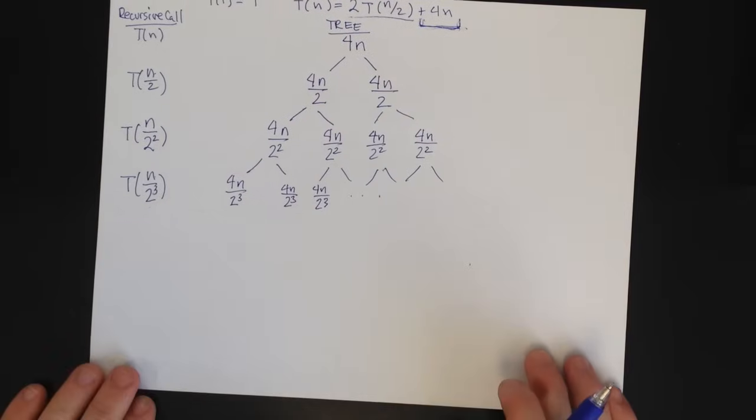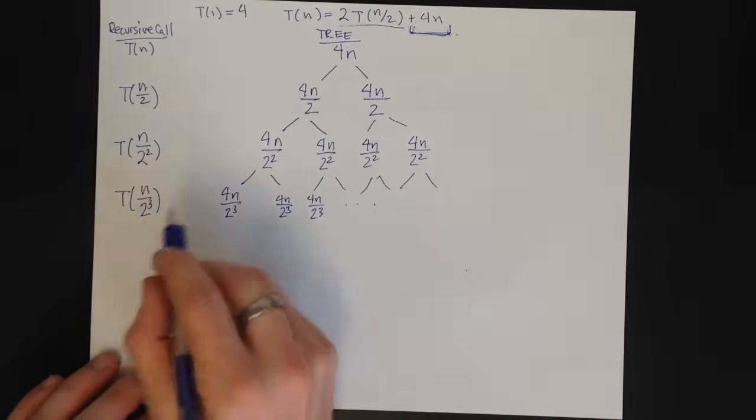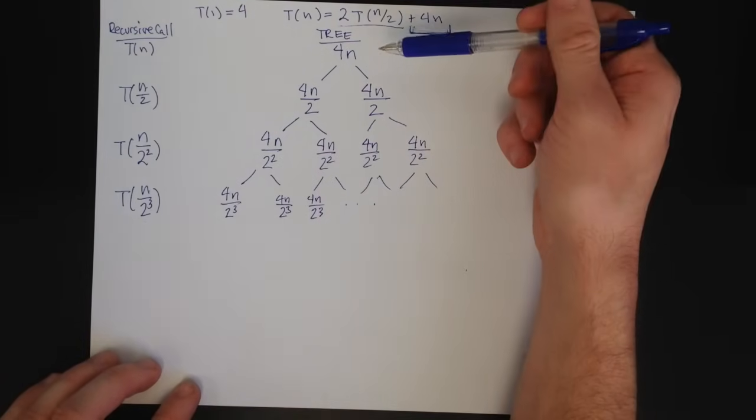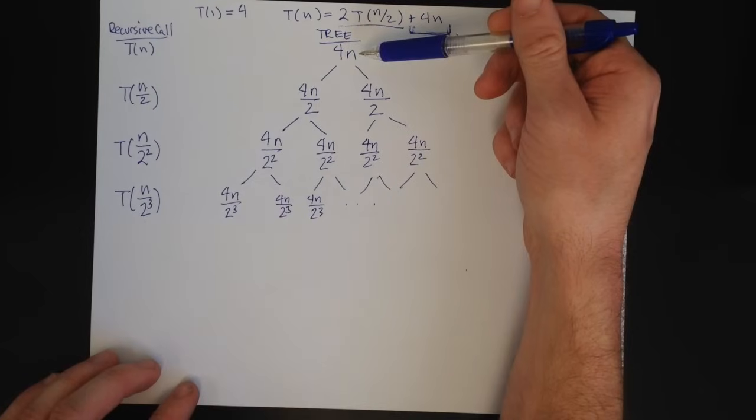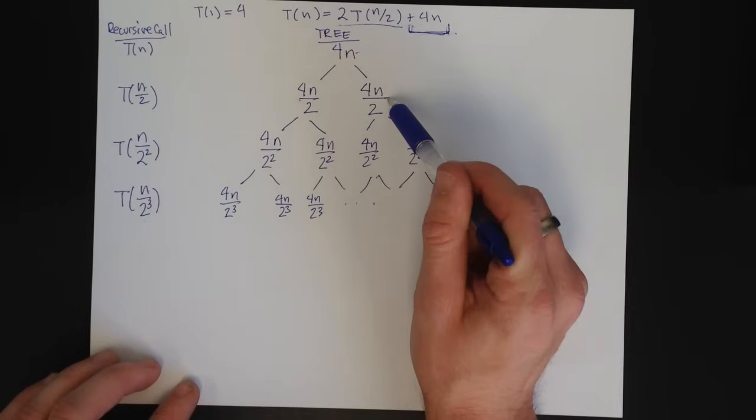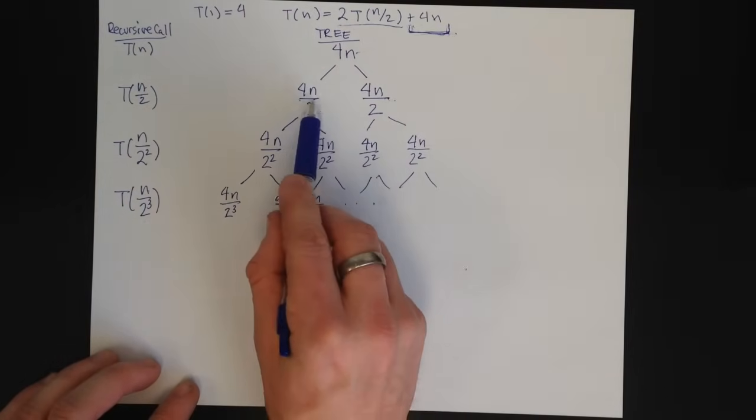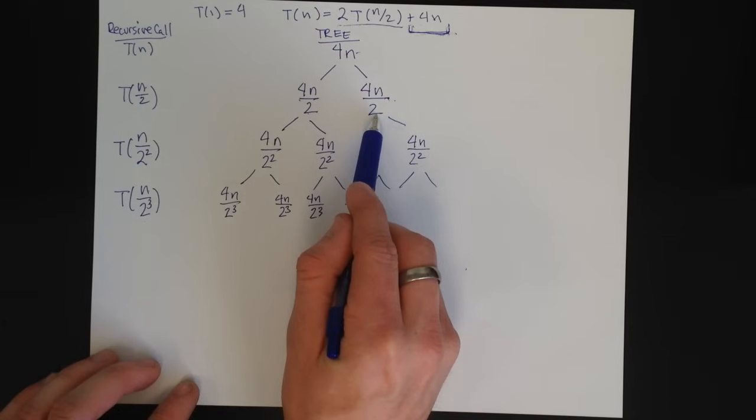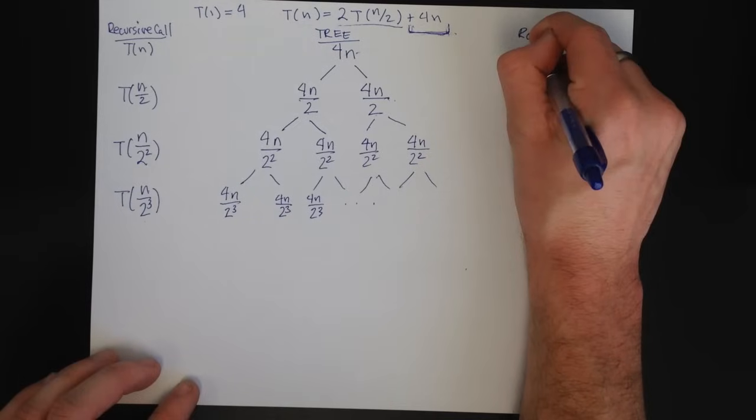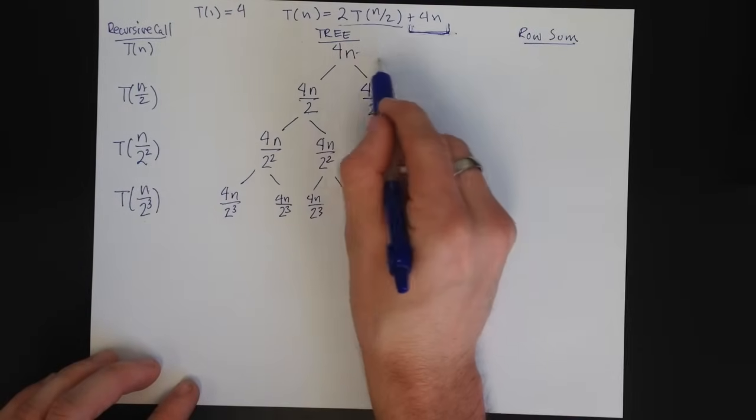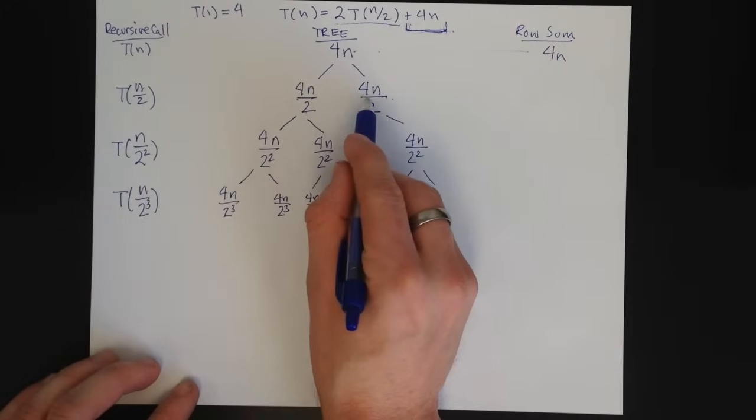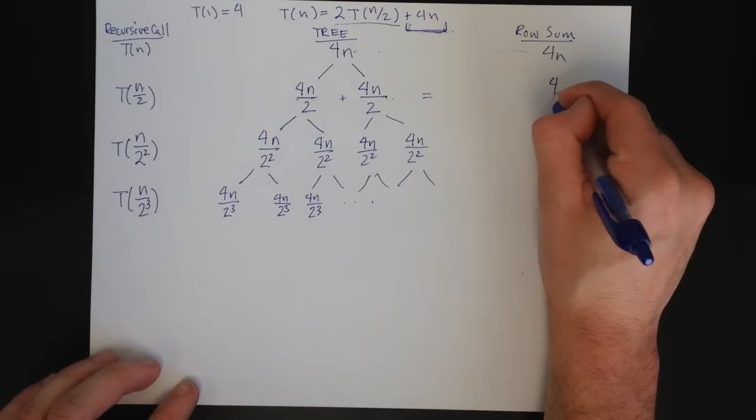The next thing we want to do in the tree method is figure out what the sum along each row is, because the time it takes before the recursive calls at this level is 4n. The time it takes at this level is the sum of these two things. And so you can see here 4n/2 plus 4n/2 is itself 4n. So what I tend to do is keep a row sum column, which is summing across each row. This is 4n. Well, this is 4n/2 plus 4n/2. So that equals 4n.